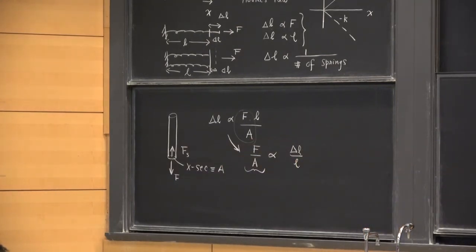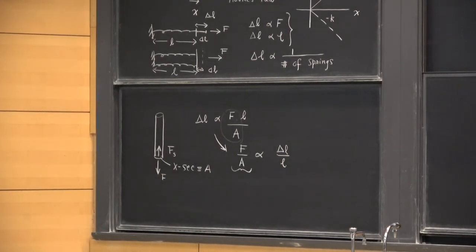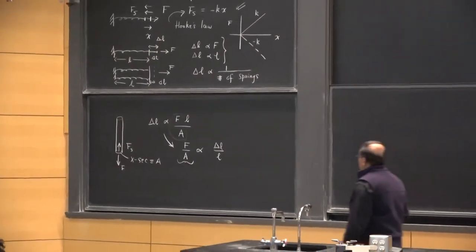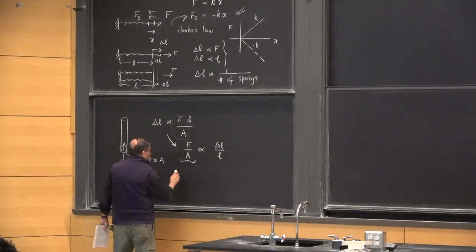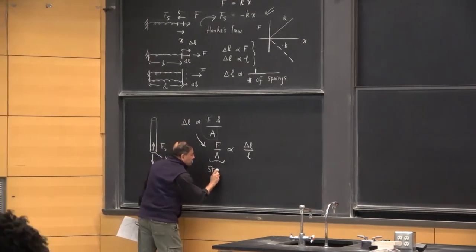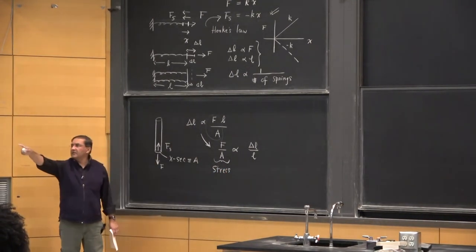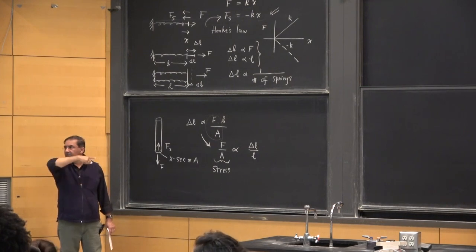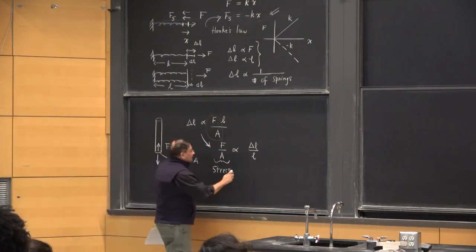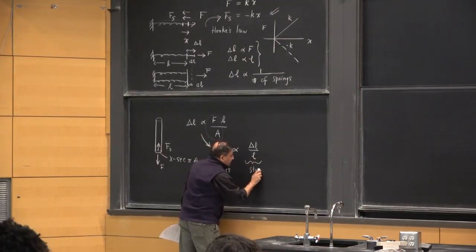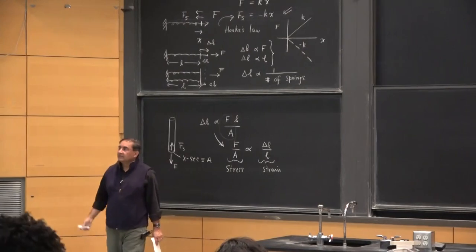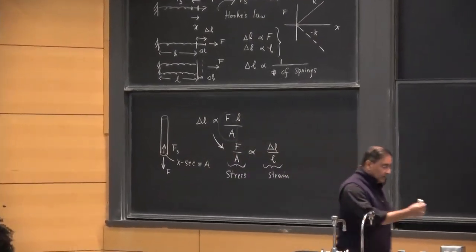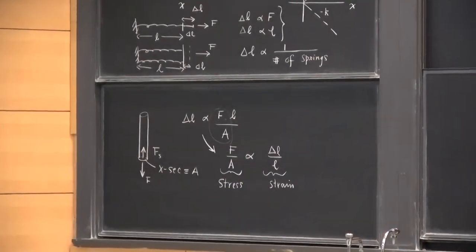Force per unit area has a name in condensed matter physics — force per unit area is what we call, in this case, stress. It's basically pressure, but it's also the same as stress. And delta L over L is called strain. These are technical words in our studies now.